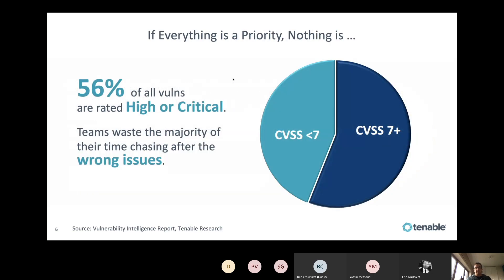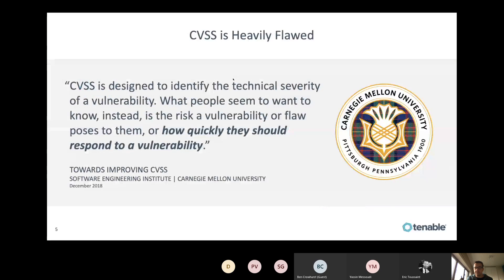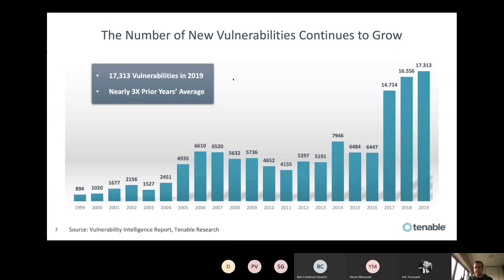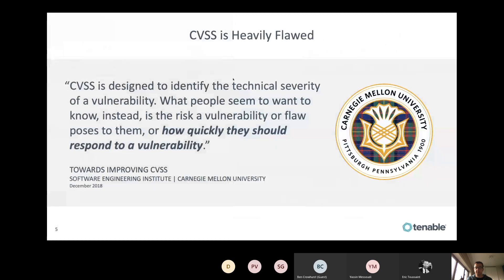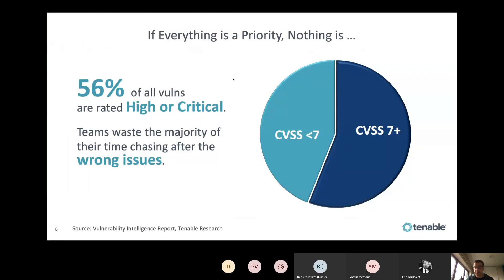Another issue with CVSS: 56% of all vulnerabilities are rated 7 or above — high or critical. In 2019 there were about 17,300 vulnerabilities. If you have to fix more than half of them, that's really a lot. You don't know where to focus, so you become overwhelmed, which is not the intention, because you need to focus on what you need to fix first.